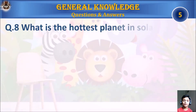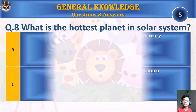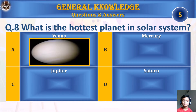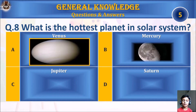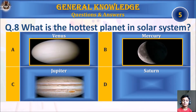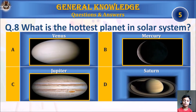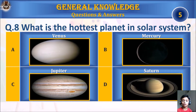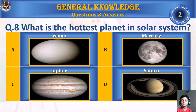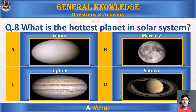Question 8: What is the hottest planet in the solar system? A. Venus, B. Mercury, C. Jupiter, or D. Saturn. Your time starts. The answer is A. Venus.